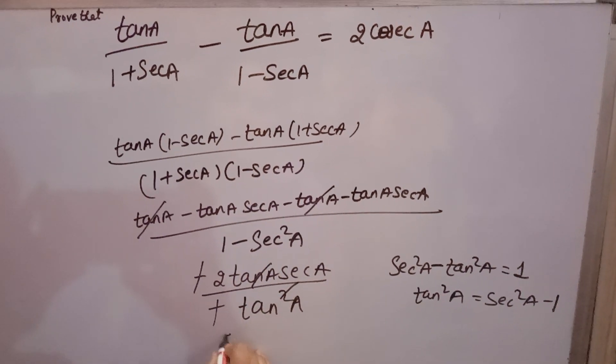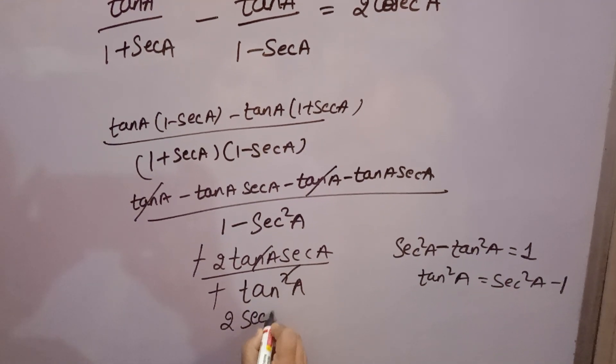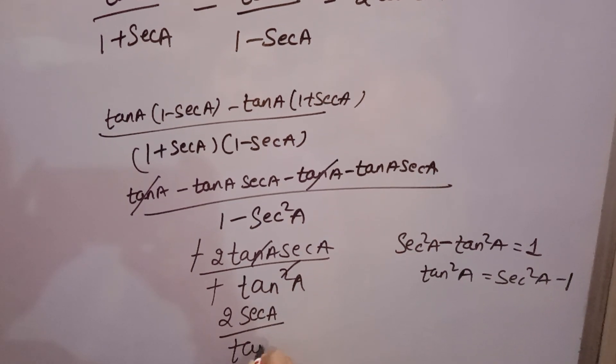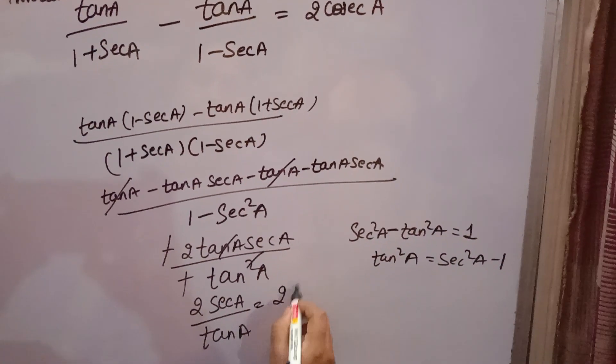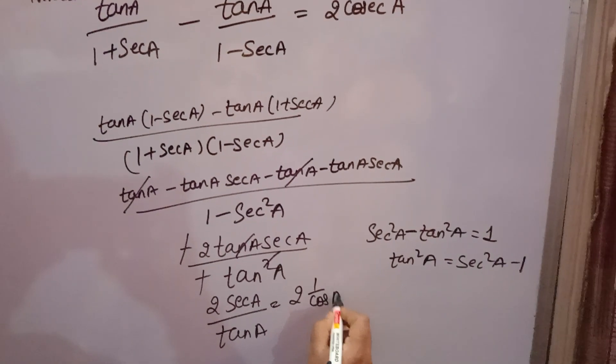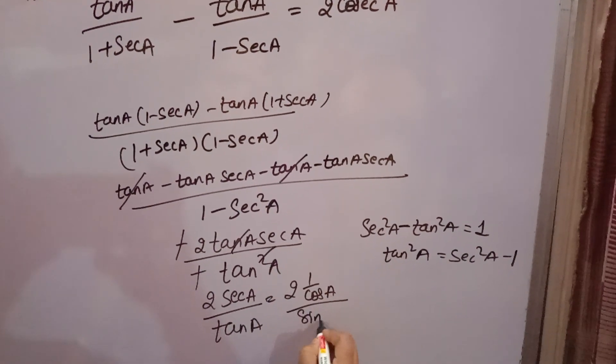tan A, tan A cancel. You will get 2 sec A over tan A. Now you want here cosec A. So secant you can write 1 over cos A, and tan you can write sin A over cos A.